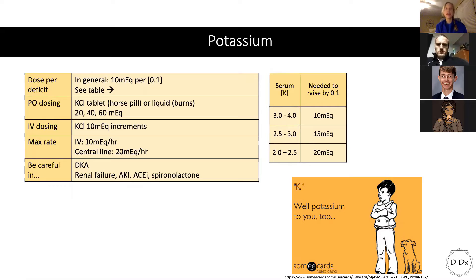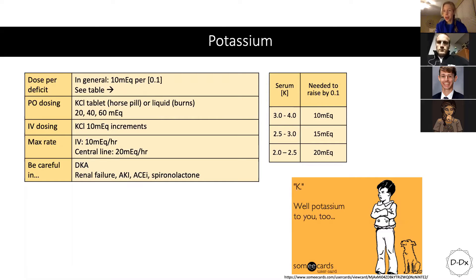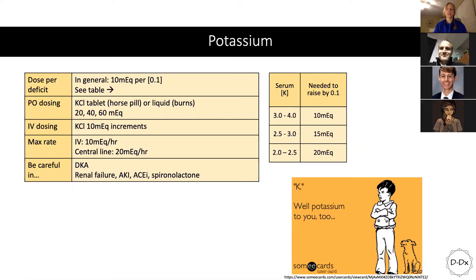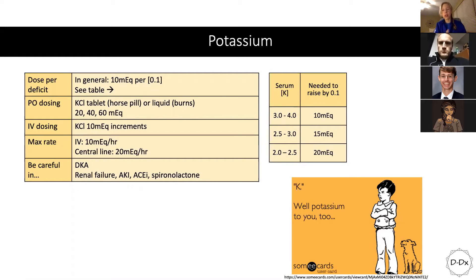For IV dosing, you really can't go much faster than 10 mEq per hour. We typically use potassium chloride. The reason is that potassium is actually used in lethal injection, so if you inject too much too quickly you will kill the patient. Do not exceed that rate. One workaround: if you have a central line you can go a little faster, since the potassium will burn peripheral veins and a larger vein closer to the heart tolerates it better.